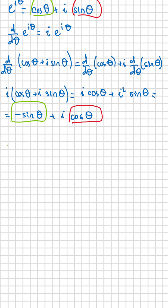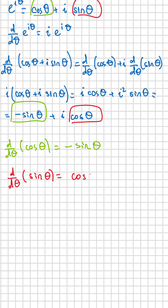Now, comparing both sides, the real parts must be equal and the imaginary parts must also be equal. From the real part, we find that the derivative of cosine theta is negative sine theta. And from the imaginary part, we find that the derivative of sine theta is cosine theta.